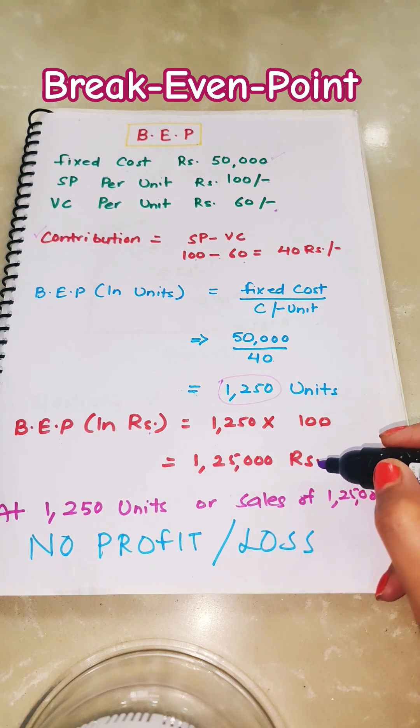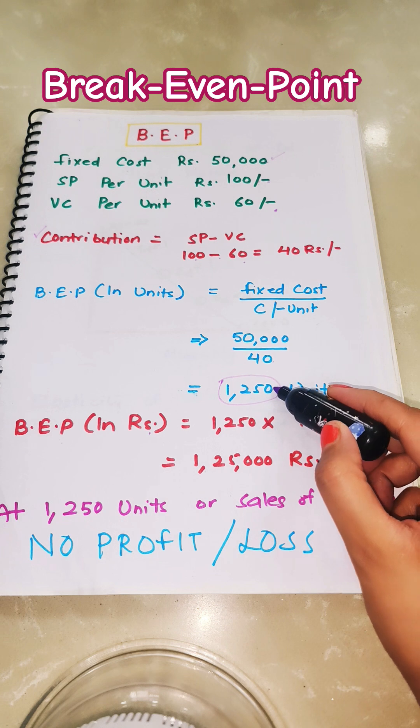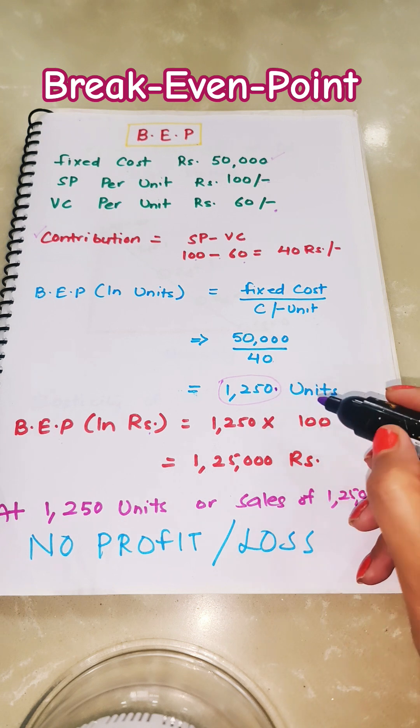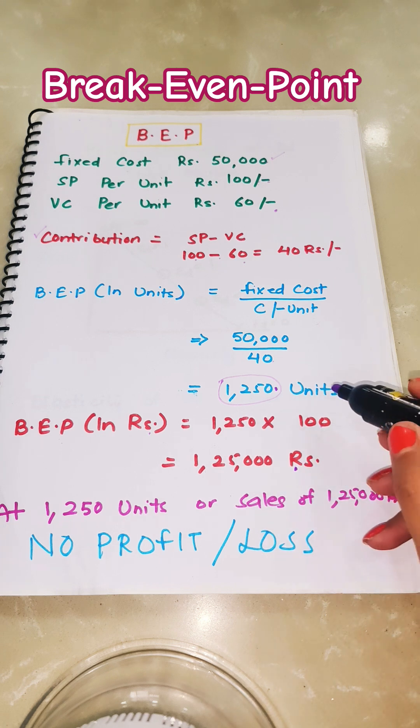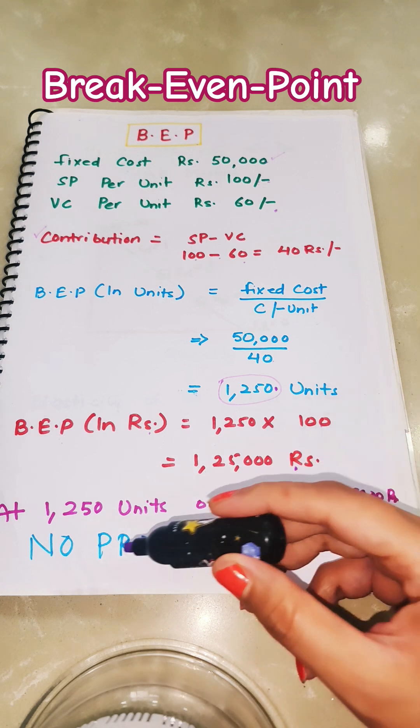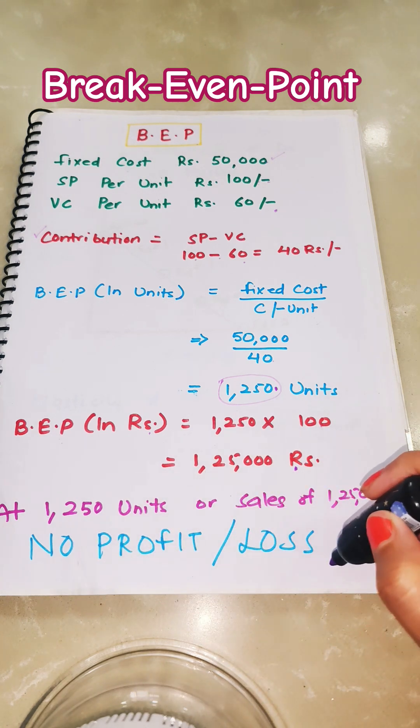This means if the company is selling 1,250 units, or making sales of Rs. 1,25,000, that will be the break-even point. At this point, the company will have no profit and no loss.